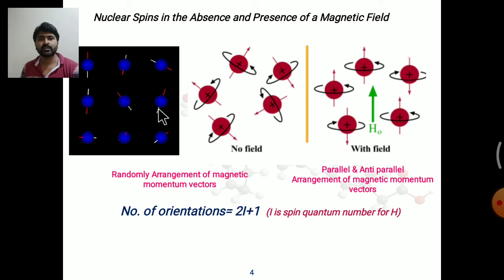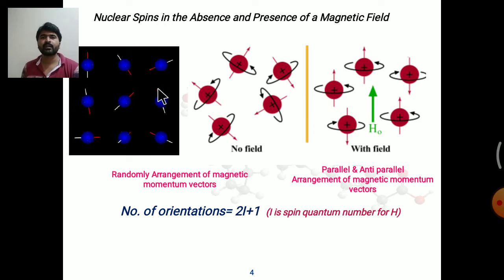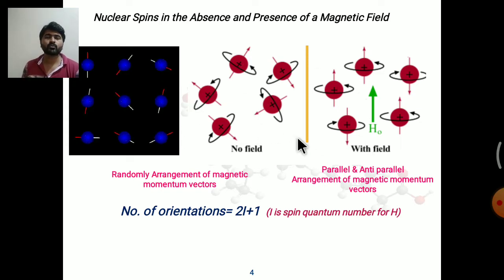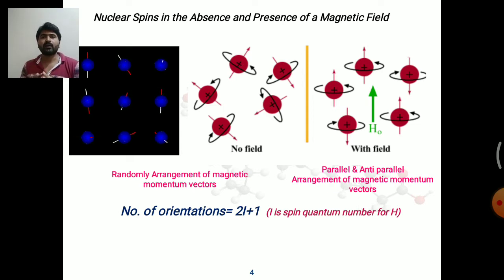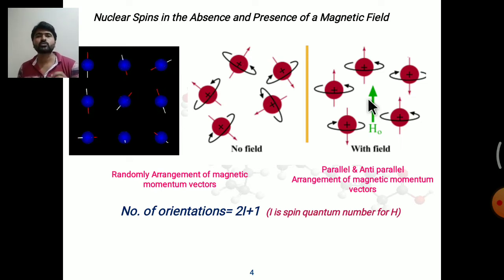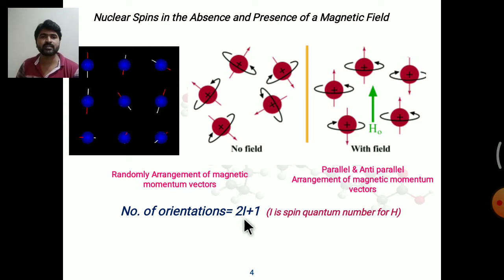When there is no external magnetic field applied, all small spinning nuclei are randomly oriented and in a degenerate state, meaning all nuclei are at an equal energy state. When we put these nuclei into an externally applied magnetic field, they align themselves either parallel or opposite to the applied field. The total number of orientations is given by the formula 2I + 1, where I is the spin quantum number. For a proton, I equals one-half, so 2 × ½ + 1 = 2, meaning there are only two possible orientations.